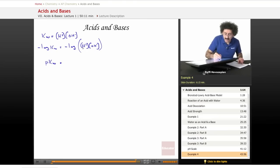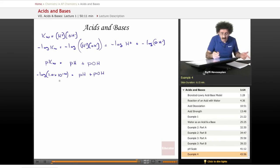Equals negative log of H plus, plus the negative log of OH minus, you end up with pH plus pOH. Well, PKW is the negative log of 1.0 times 10 to the negative 14 equals pH plus pOH, because KW is 1 times 10 to the negative 14. The negative log of that is 14.